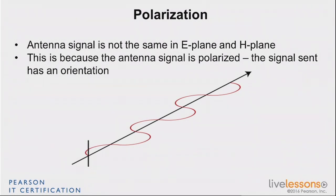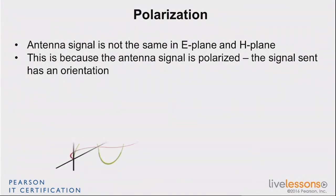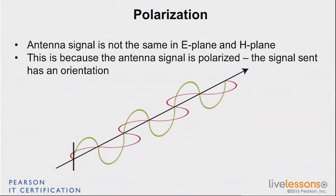So if the electric field is horizontal, the magnetic field is vertical. If the electric field is vertical, the magnetic field is horizontal. That's what polarization means — that there are these two directions that you need to be aware of.